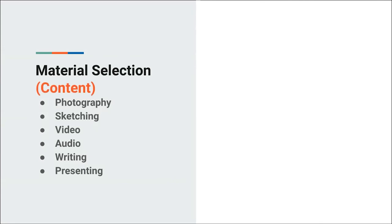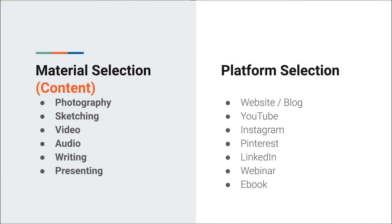Next is material selection — very important for buildings and for your passive house. In this analogy, 'material' means content. I want to give you a new perspective: first, think about what you like to do. Basically all the content you see online is one of these things, and any of these things you can use to promote passive house. If you're starting from scratch, pick one. And I want you to separate it from the platform — the platform is how you distribute it, not what you're making.